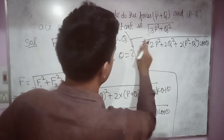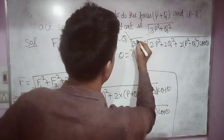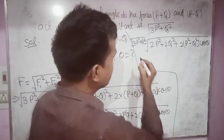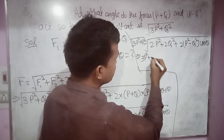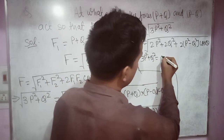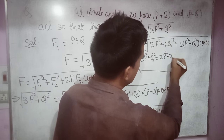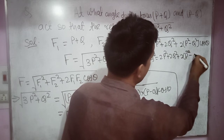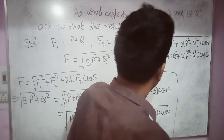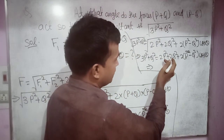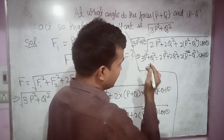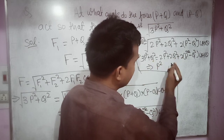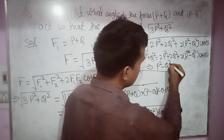This all equals √(3P² + Q²). Now squaring both sides: 3P² + Q² = 2P² + 2Q² + 2(P² − Q²)·cos θ. Bringing 2P² and 2Q² to the left-hand side gives P² − Q² = 2(P² − Q²)·cos θ.